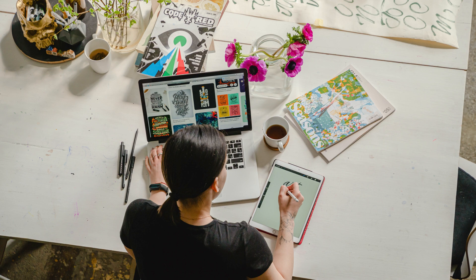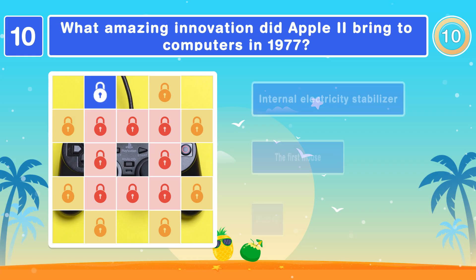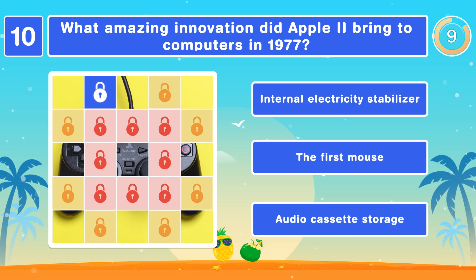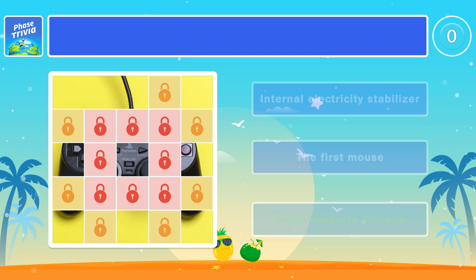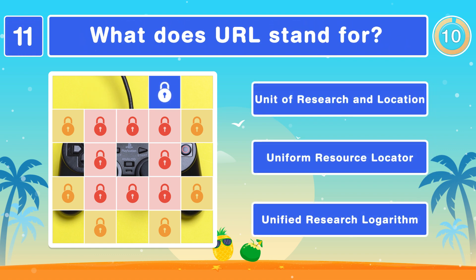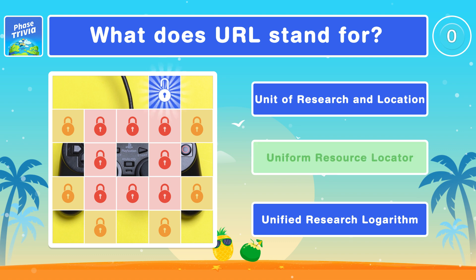Let's choose an intermediate one now. What amazing innovation did Apple II bring to computers in 1977? Audio cassette storage. What does URL stand for? Uniform Resource Locator.